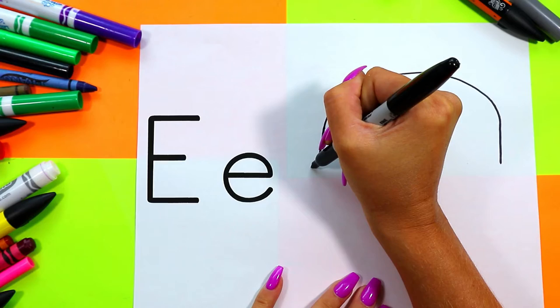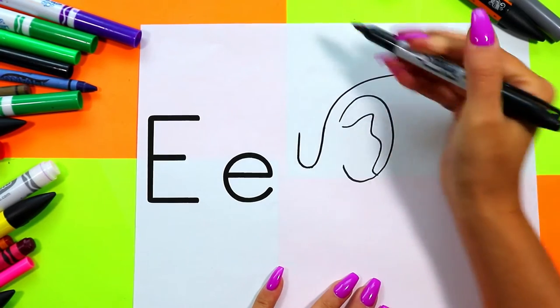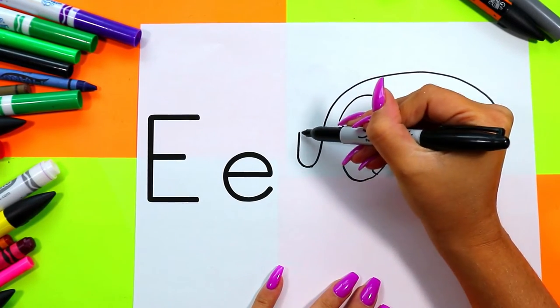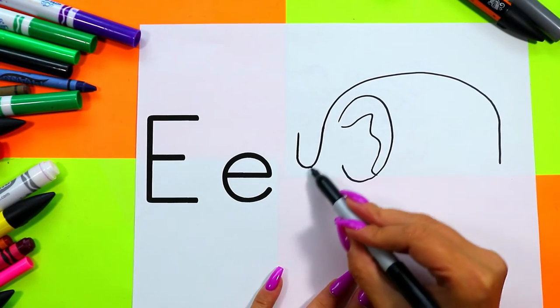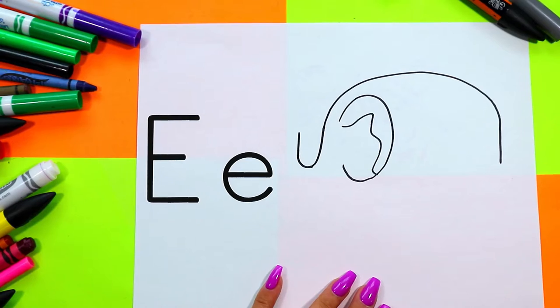Next, we're going to draw a line that curves down and up for elephant's trunk. Down and up for elephant's trunk.